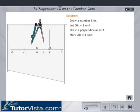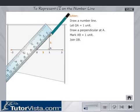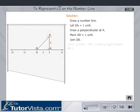Mark AB equal to 1 unit. Join OB. Since angle OAB equals 90 degrees, triangle OAB is right-angled at A. In the right-angled triangle OAB,